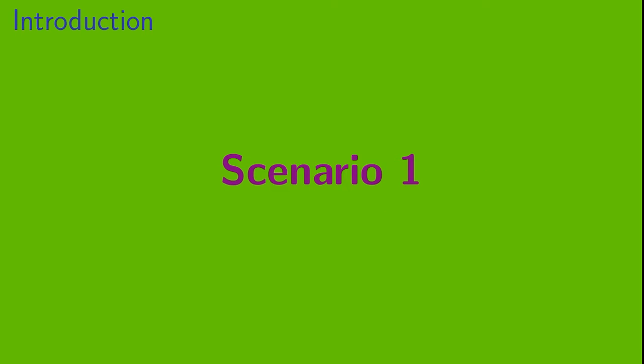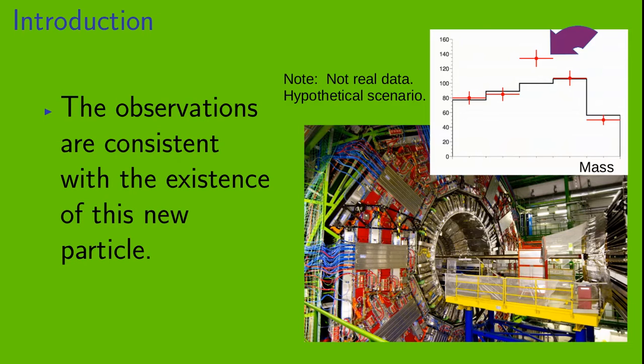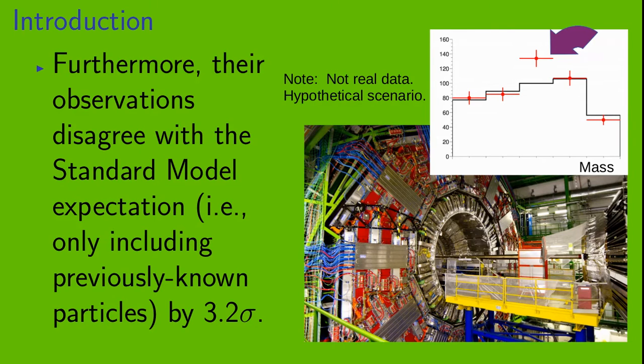Scenario 1. Physicists at CERN report evidence for a previously unknown particle. The observations are consistent with the existence of this new particle. Furthermore, their observations disagree with the standard model expectation, which includes only previously known particles, by 3.2 sigma.